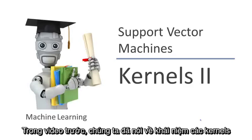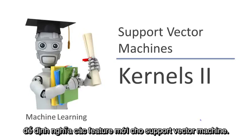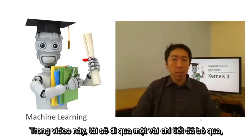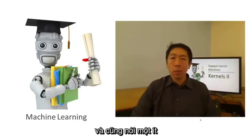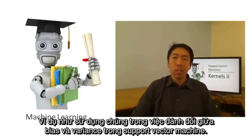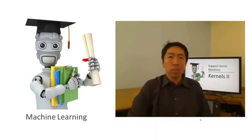In the last video, we started to talk about the kernel idea and how it can be used to define new features for a support vector machine. In this video, I'd like to fill in some of the missing details and also say a few words about how to use these ideas in practice, such as how they pertain to the bias-variance trade-off in support vector machines.